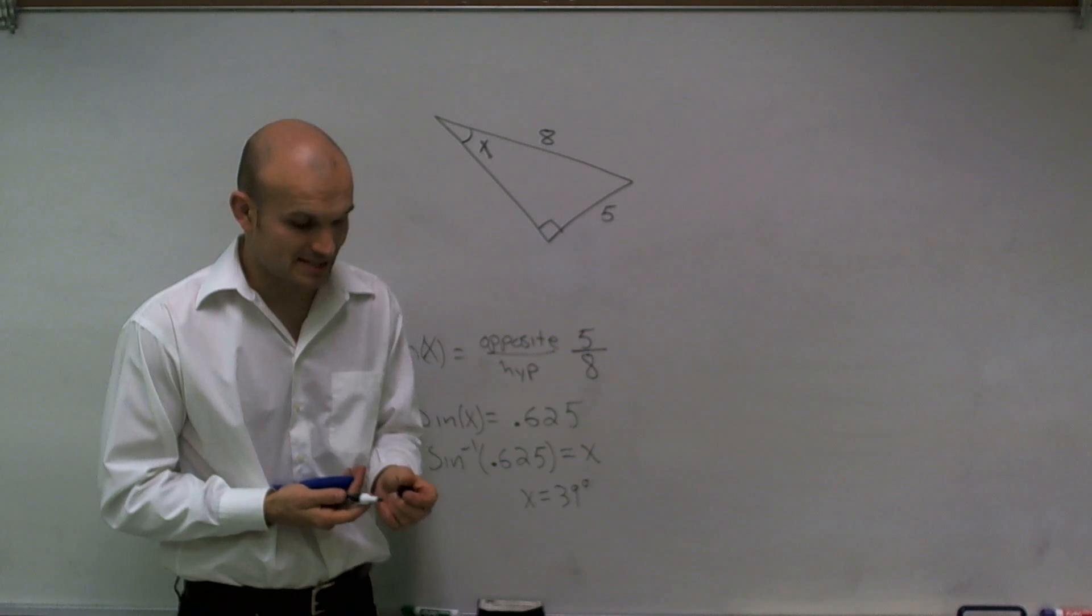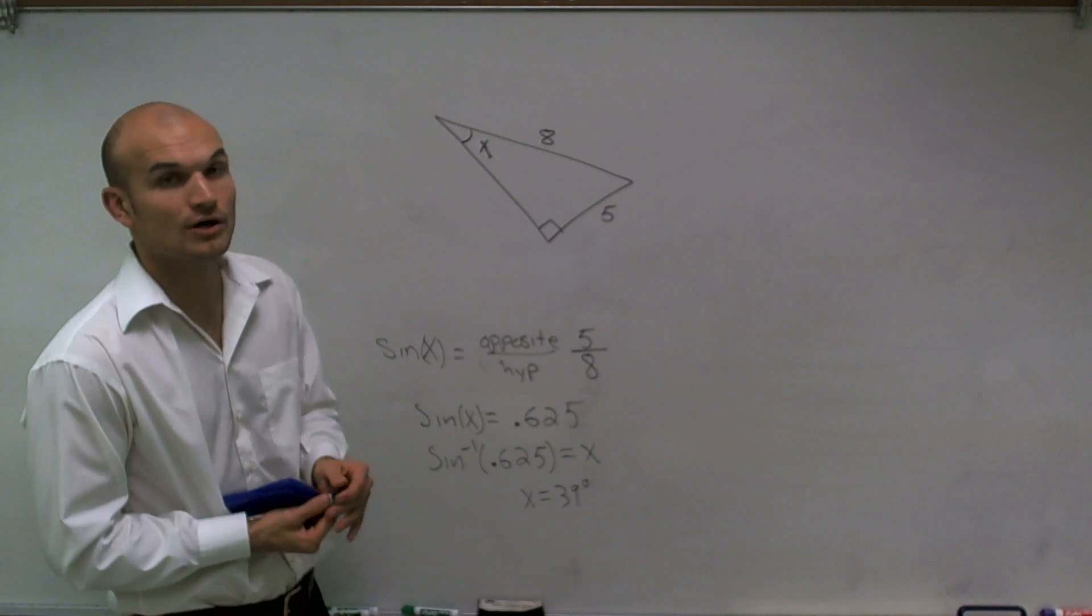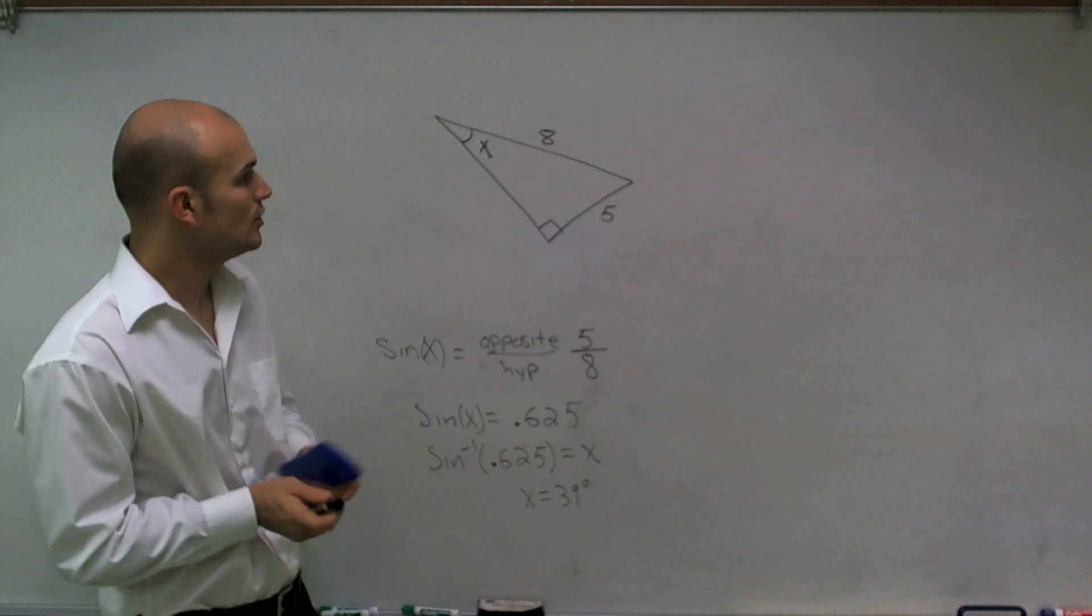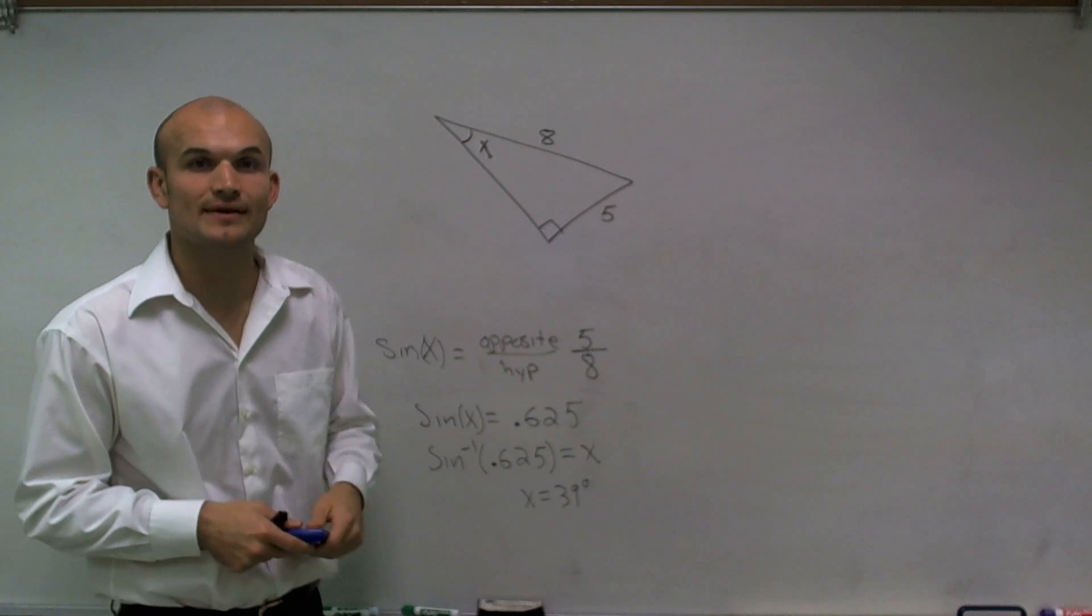So that is how you find the missing angle measurement when given a right triangle and two side lengths. Thanks.